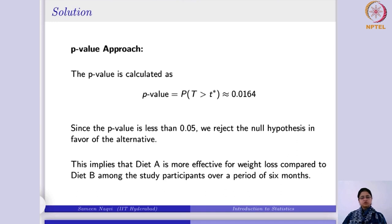We conclude that diet A is more effective for weight loss compared to diet B among the study participants over six months. This is how hypothesis testing works for the difference of two means — first case with equal variances, second case with unequal variances. Both cases used independent samples; next we can consider situations where samples are not independent and we remove dependency by considering differences in corresponding values.